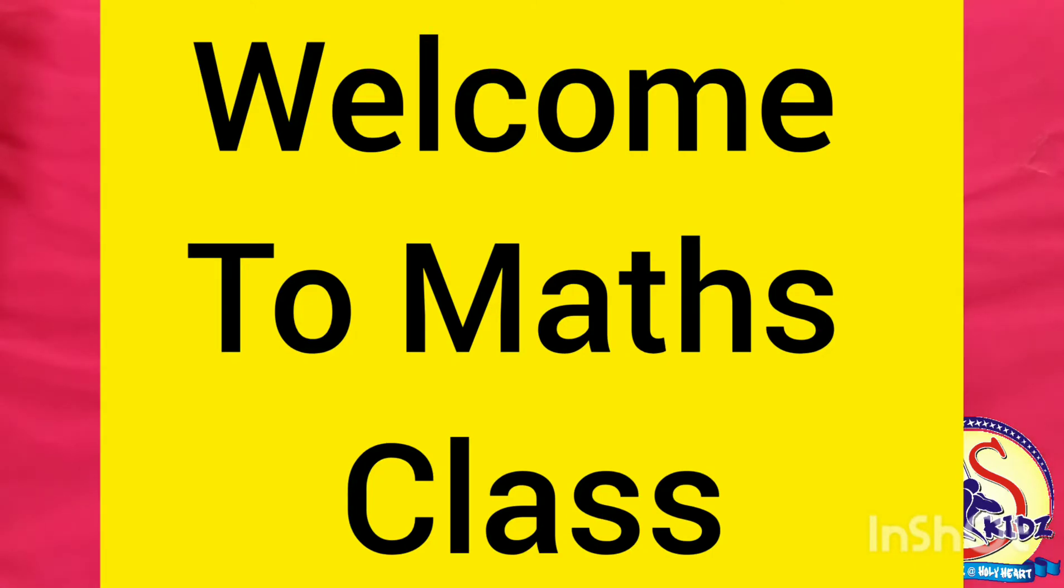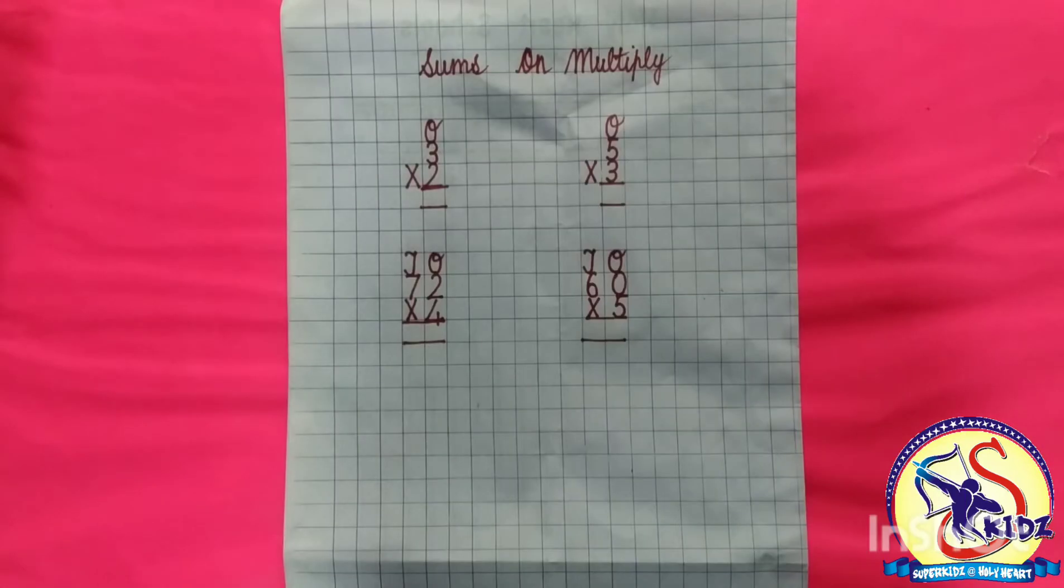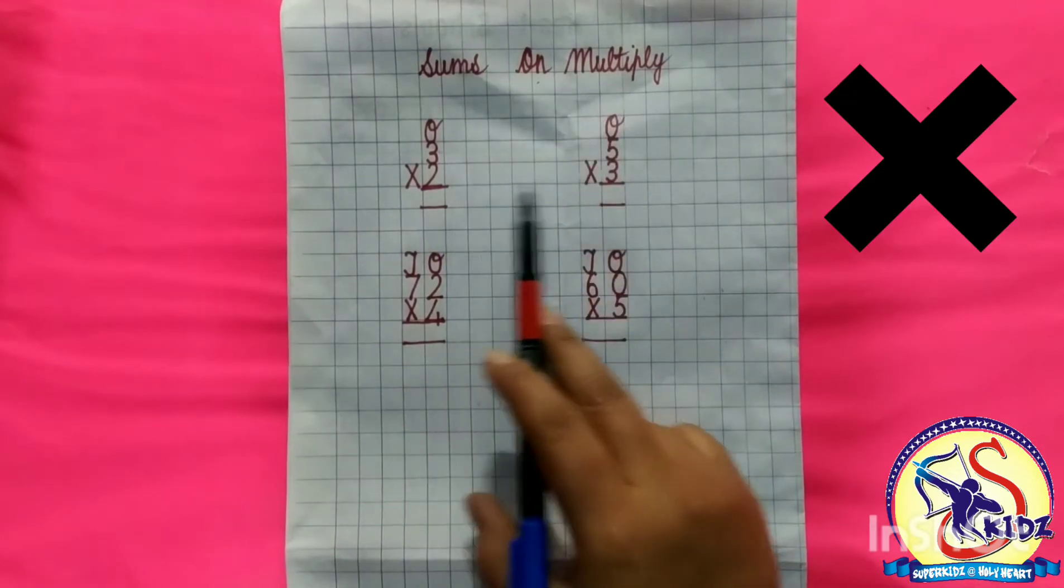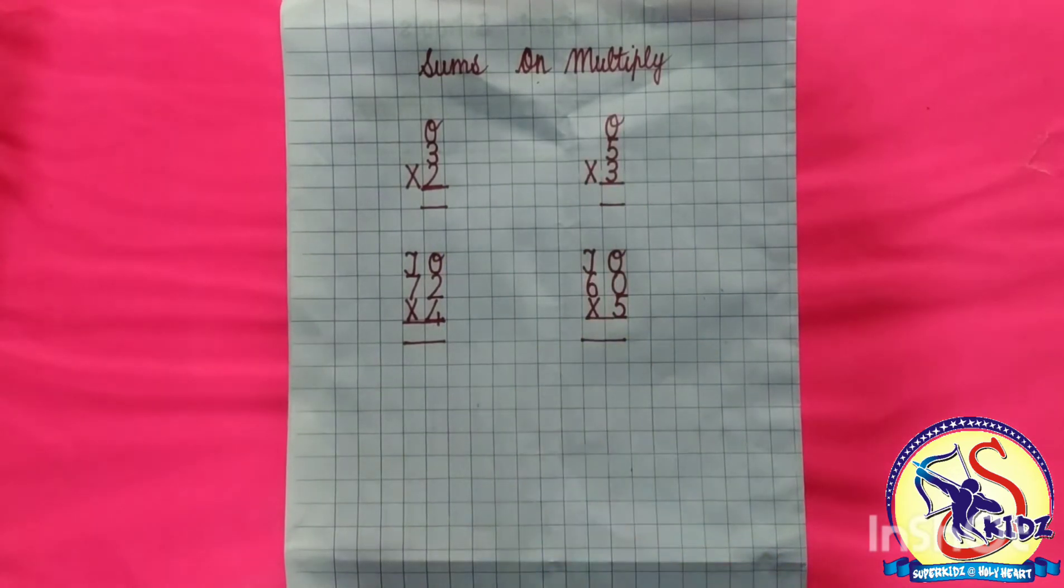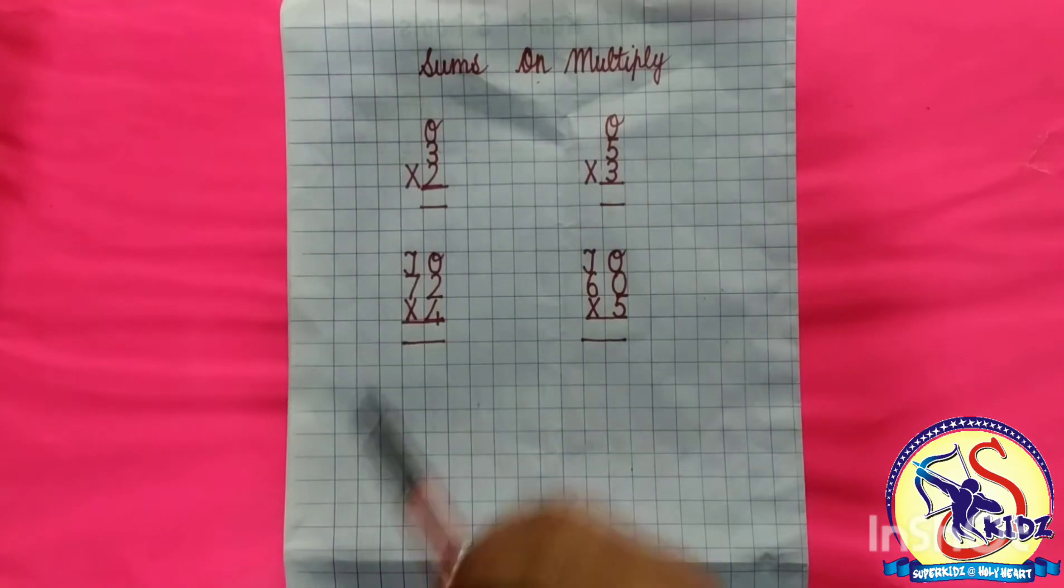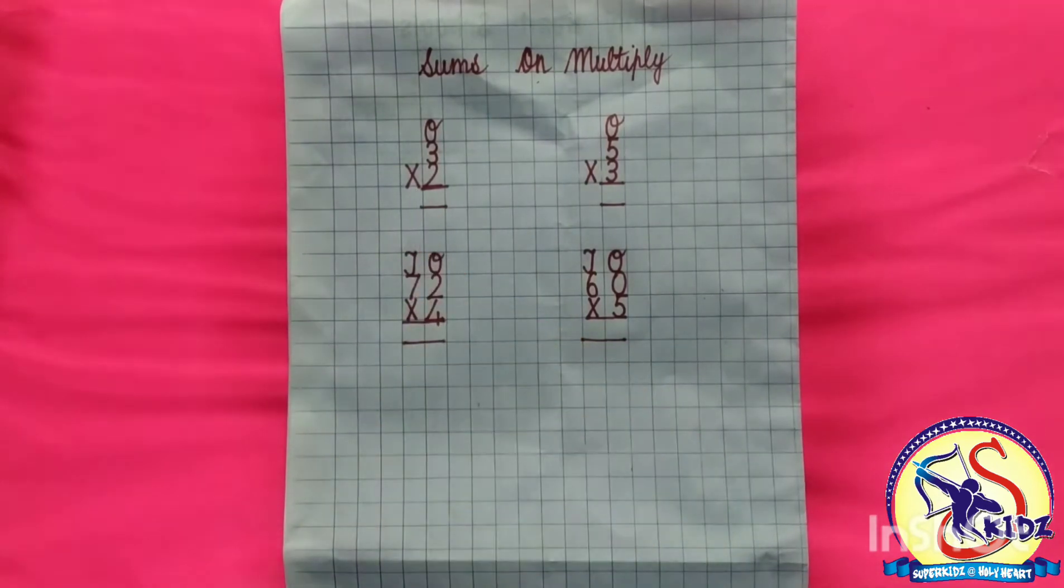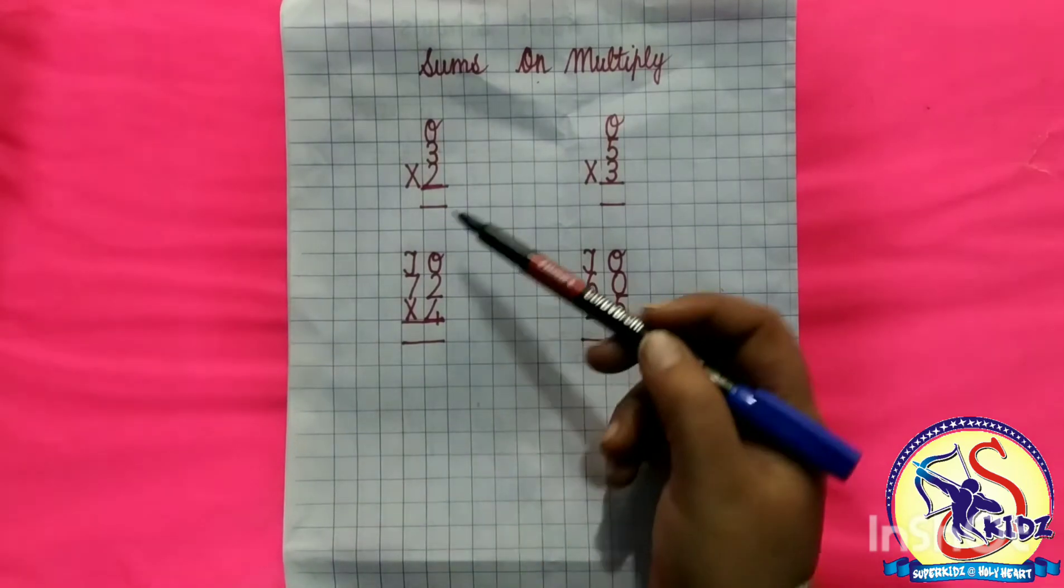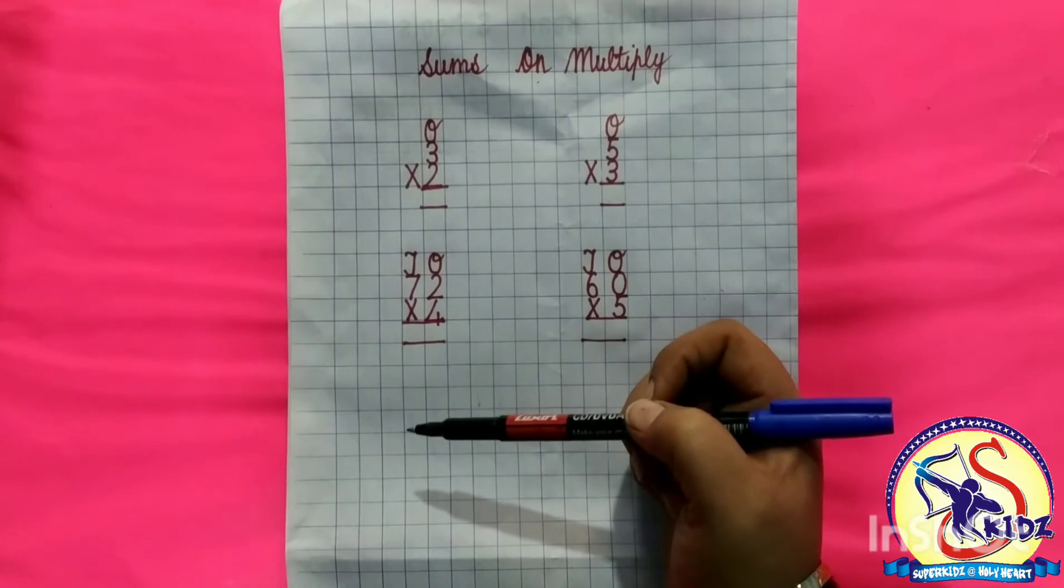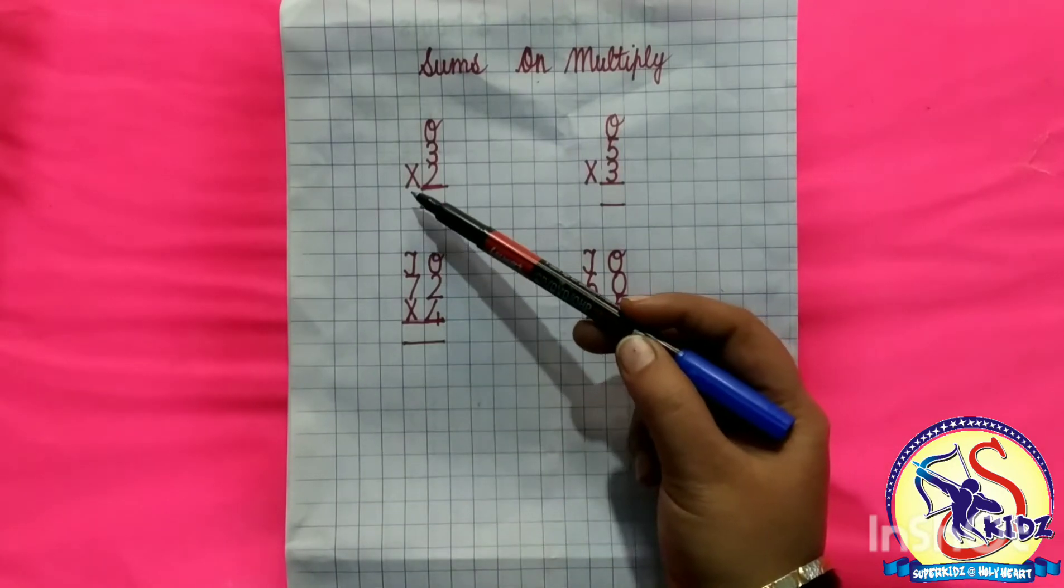Welcome to Maths class. Today we are going to do sums on multiply with single digit numbers and double digit numbers. This is a sign of multiply. We have taken two numbers here, 3 and 2, with sign of multiply.